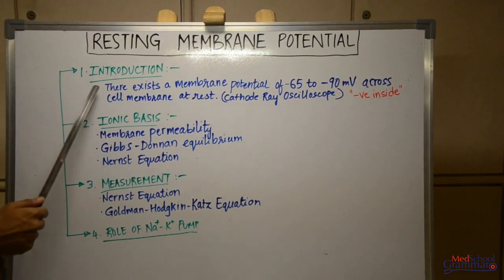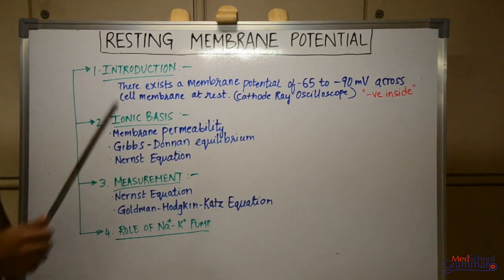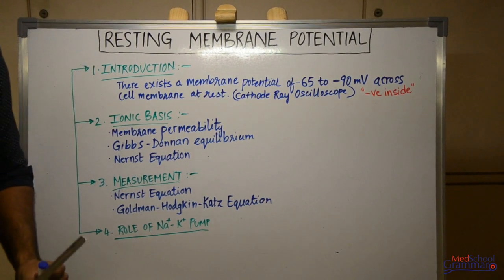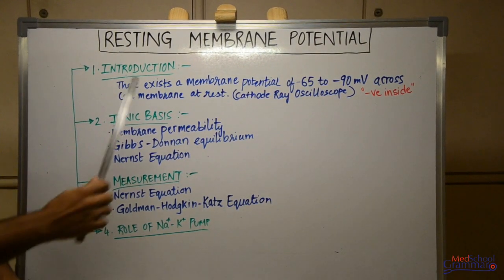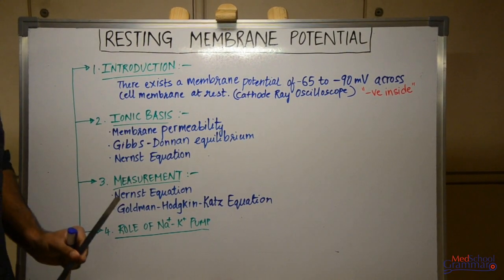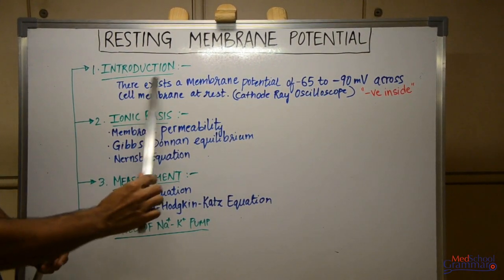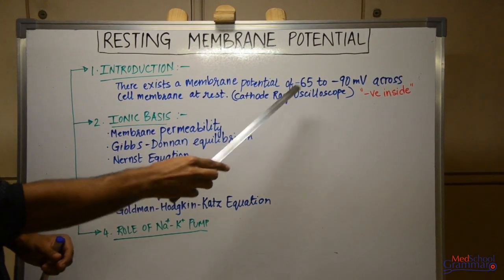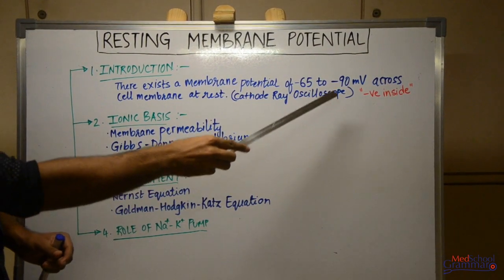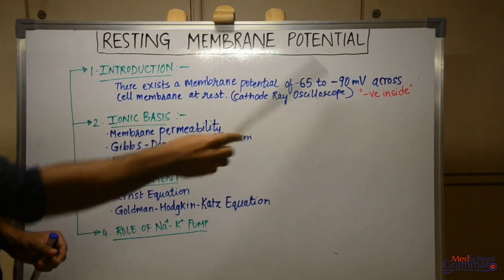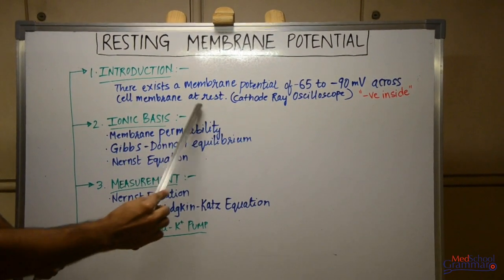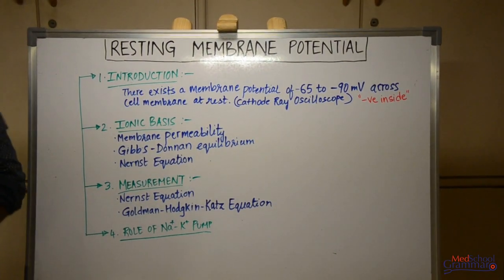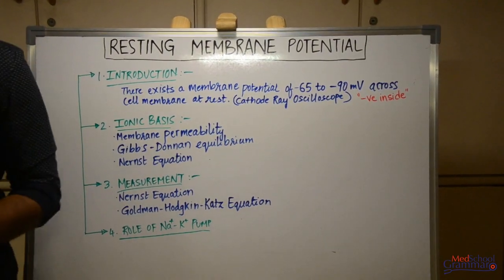Starting with the introduction — what is resting membrane potential? There exists a membrane potential of minus 65 to minus 90 millivolts across the cell membrane at rest. This is known as resting membrane potential.